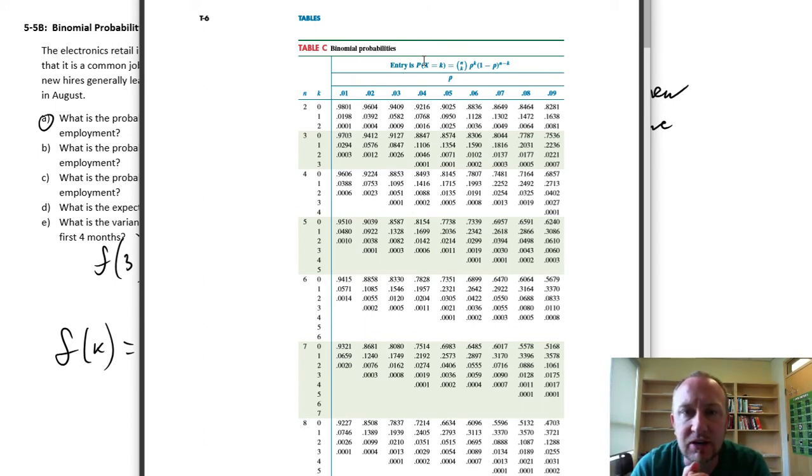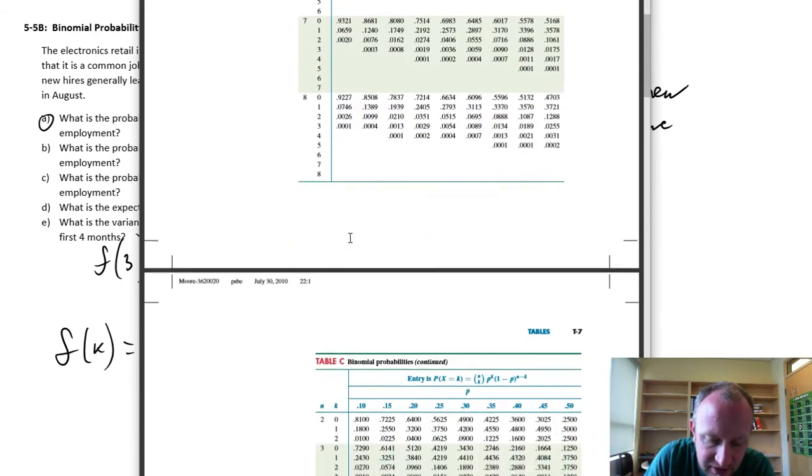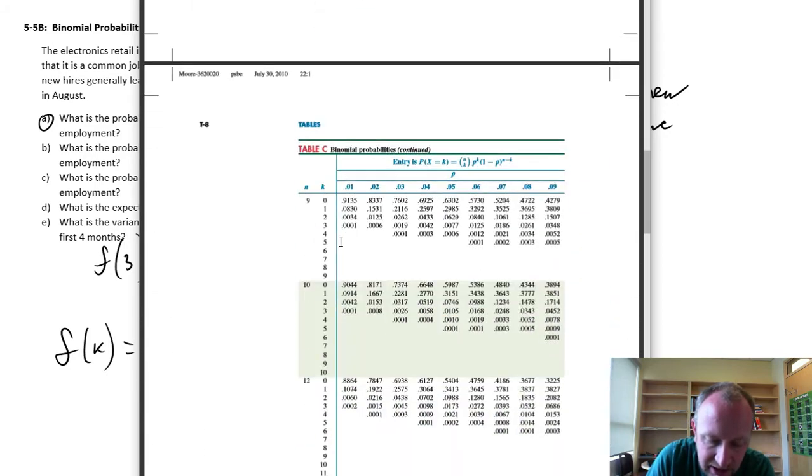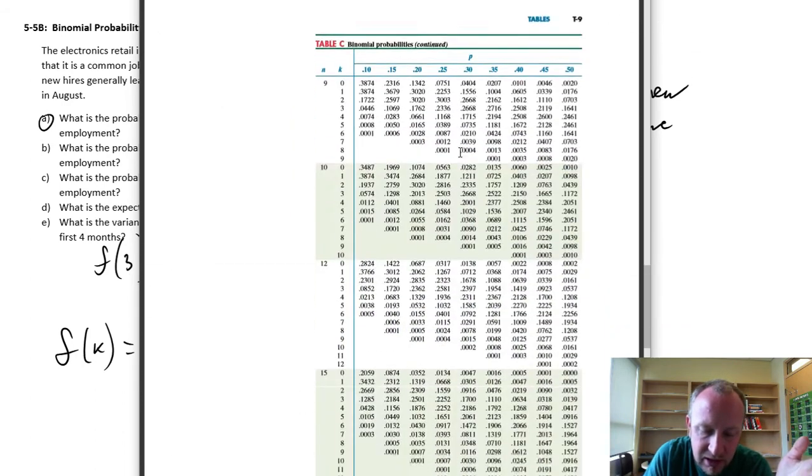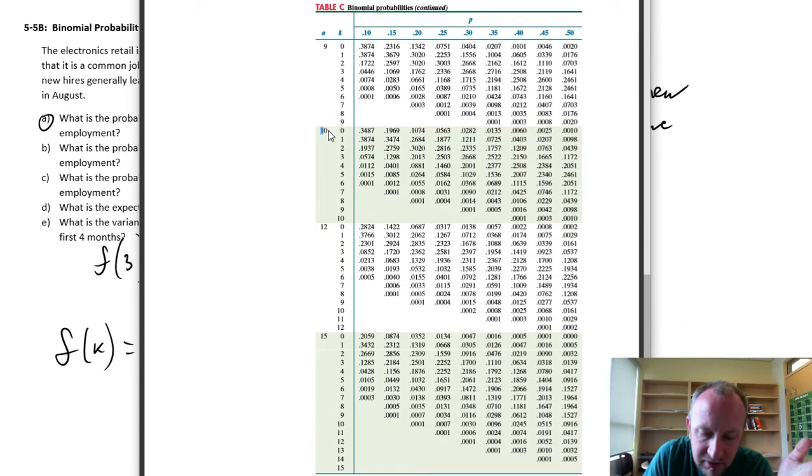So we need to identify what part of this table is really relevant for our particular problem. So, the first thing that I'm going to do about my number of trials is 10. So, the very first column on my table has the number of trials, so, 2, 3, 4, 5, 6, 7, 8, and it goes up to 8 again. So, okay, here I have 10 trials, but my probabilities are wrong, .01234. So, I'm going to go down to the next page.